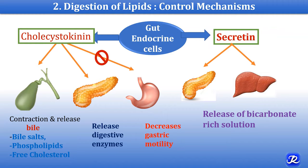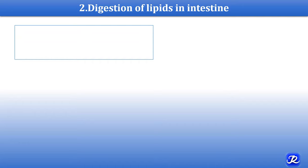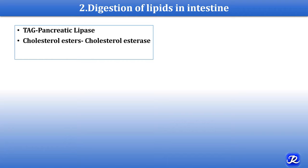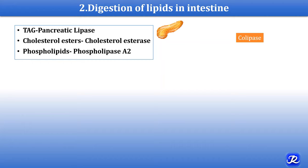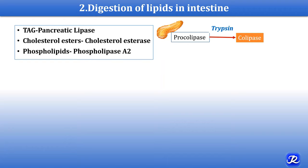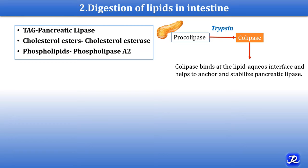Pancreatic enzymes are mainly responsible for digestion of lipids in the intestine. Pancreatic lipase causes hydrolysis of triacylglycerol. Cholesterol esterase causes hydrolysis of cholesterol esters. Phospholipase A2 causes hydrolysis of phospholipids. There is one more enzyme secreted by the pancreas called colipase. It is secreted as pro-colipase and then converted into colipase by the action of trypsin. Without colipase, pancreatic lipase cannot act on triacylglycerol, because bile salts present in the intestine prevent the action of pancreatic lipase. Colipase binds at the lipid-aqueous interface and anchors and stabilizes pancreatic lipase so it can act on triacylglycerol.